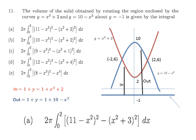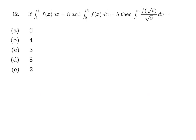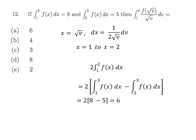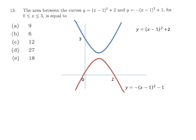For question 12, we do substitution with x replaced by a new expression, so dx transforms accordingly. The limits x: 1 to 2 become new limits. Using the given information, we rewrite the integral in terms of known values: from 1 to 3 minus 2 to 3, which equals 1 to 2. This evaluates to 8 − 5, giving 6 as the final answer, option A.